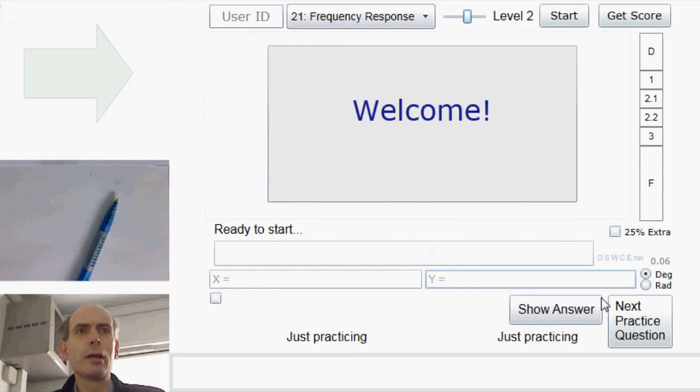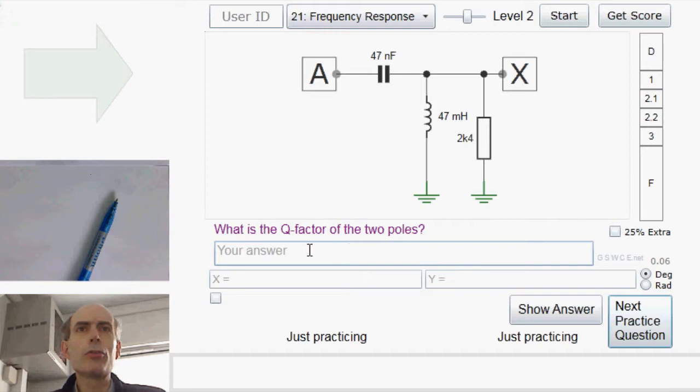Right. Now, what is the Q factor of the two poles? Well, I'll go through this one. After you've done a few of these, you'll find out what the formulas for the various circuit configurations are, and it'll just be a case of looking up the relevant formula to use. But for this one, I'll just go through it from first principles.